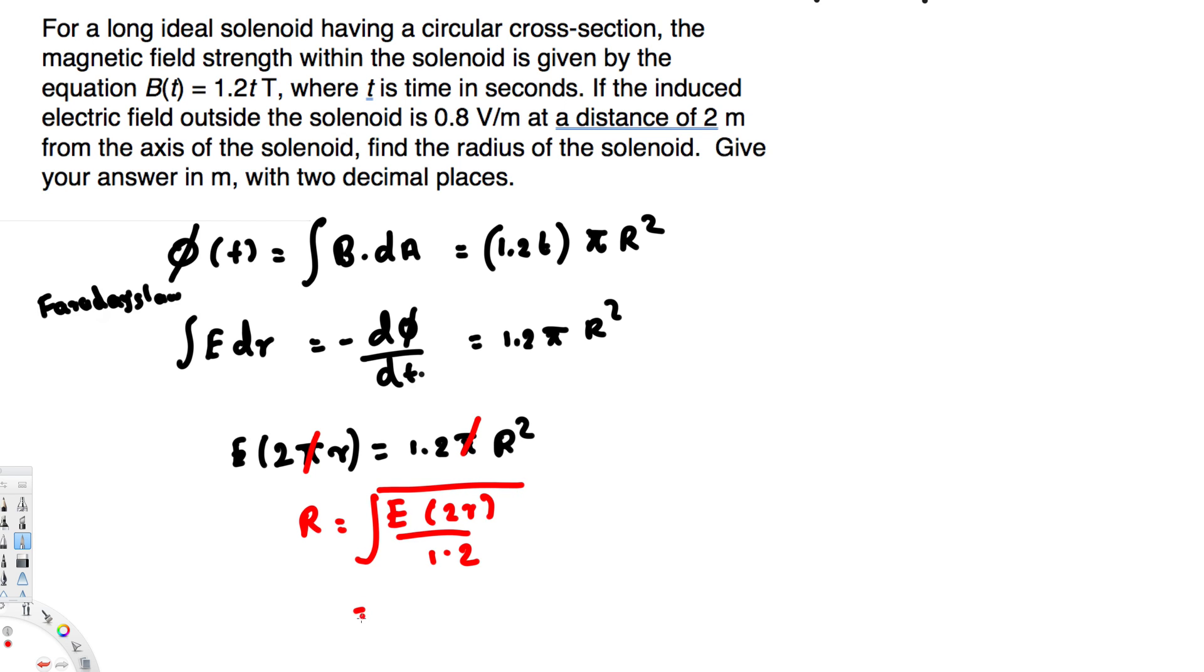We know all the values right now because E is the electric field that is provided, 0.8 volts per meter. So 0.8 times 2 times the distance, this is distance 2 meters from the axis of the solenoid, that is this r, divided by 1.2.